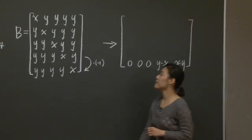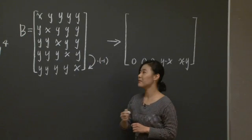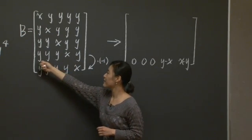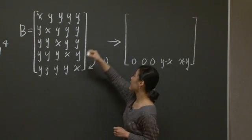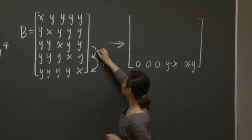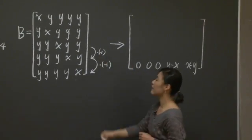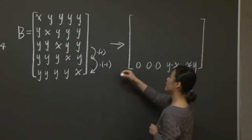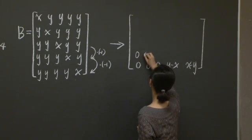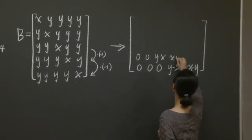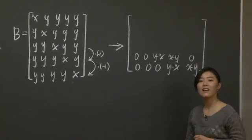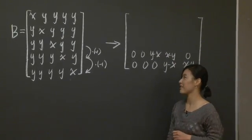And it's similar with the fourth row and the third row. They have common entries here, here, and here. So you subtract the third row from the fourth row. You update the fourth row to 0, 0, y minus x, x minus y, 0. Again, three zero entries.